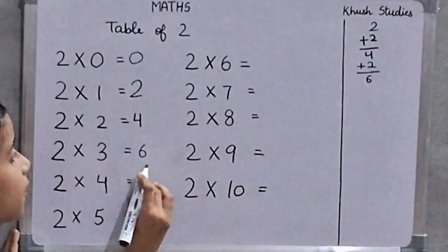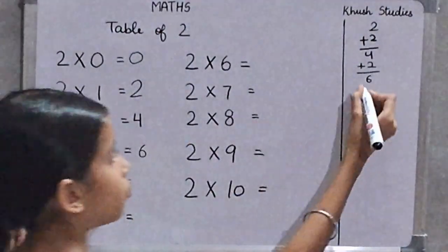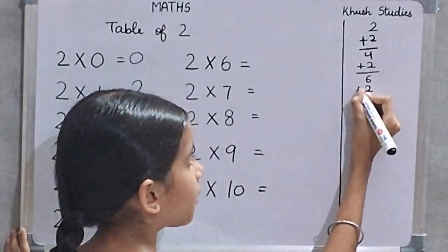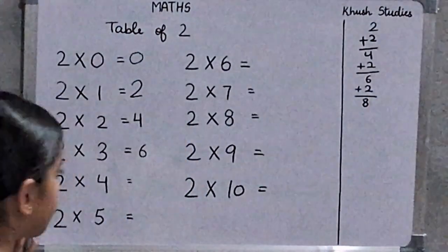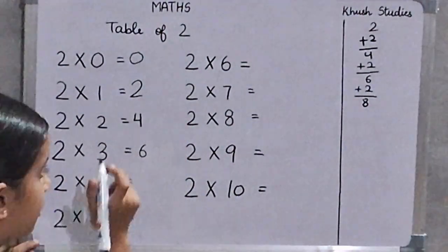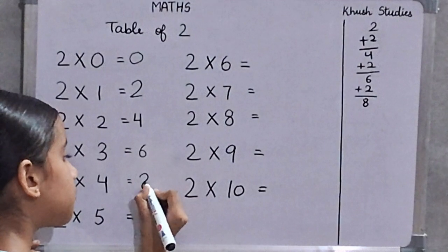Now, we will add 2. 4 plus 2 is 6. So, 2 threes are 6. Now, we will add 2. 6 plus 2 is 8. So, 2 fours are 8.